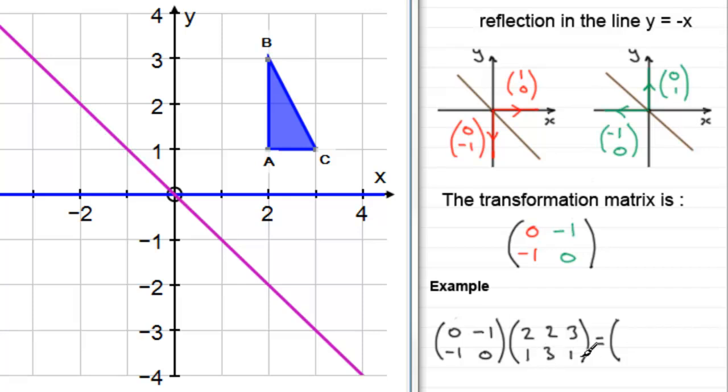What we get if we do the top row with each of the columns is that we end up with negating all the numbers on the bottom, so you get minus 1, minus 3, and minus 1. And when we multiply the bottom row with each of the columns, we negate all the top row, so that would be minus 2, minus 2, and minus 3.